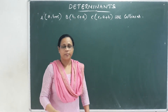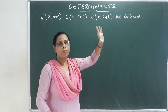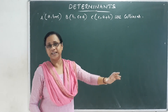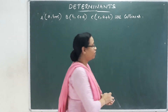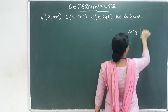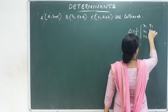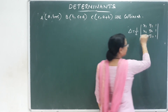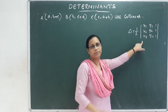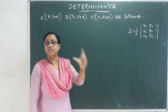Let's go to the next lesson. A, B, C — what do you mean? Three points. These three points are collinear points. In this chapter, we have a formula for the area: Delta equals half of the determinant with x1, x2, x3 in one row, y1, y2, y3 in the next, and 1, 1, 1 in the last. If this area is 0, the points are collinear. Then we do a determinant — the value of the determinant is 0.